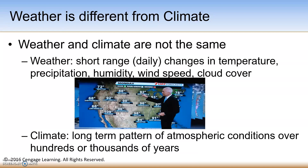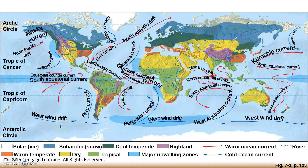Climate varies in different parts of the Earth, primarily because of global air circulation and ocean currents that distribute heat and precipitation unevenly between the tropics and other parts of the world. Factors that influence climate include incoming solar energy from the Sun, the Earth's rotation, global patterns of air and water circulation, the gases in the atmosphere, and the Earth's surface features such as topography and various changes in elevation.